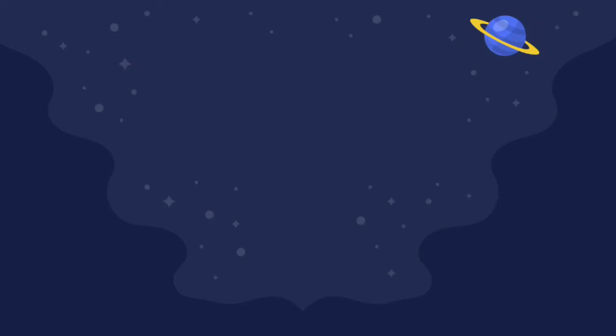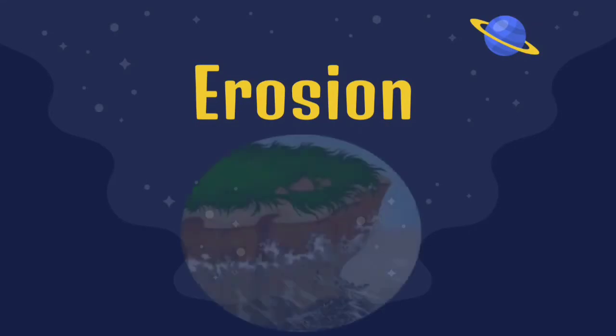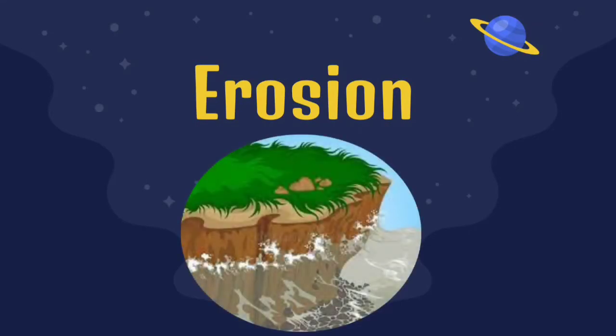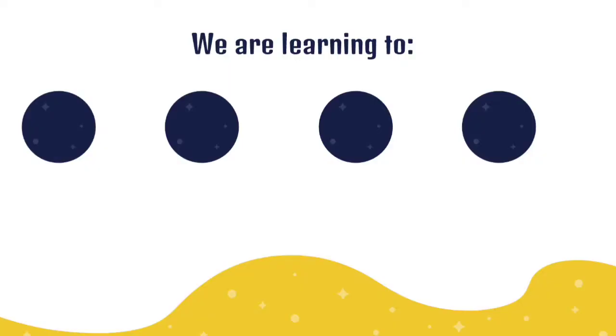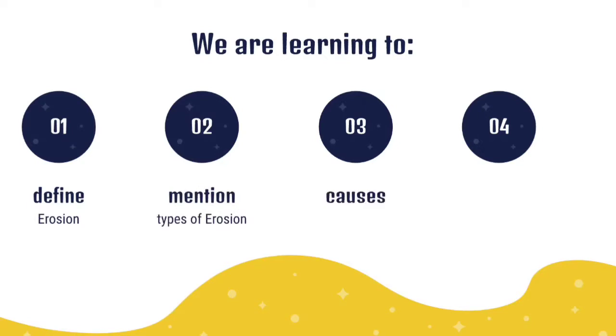Today we are learning a very interesting topic called erosion. Look at what an erosion picture looks like. It causes the surface of the earth to be broken off. We are learning four things today. First, how to define erosion. Second, to mention types of erosion. Third, the causes of erosion. And fourth, control of erosion.